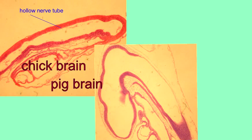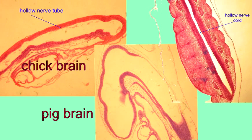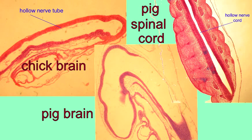The neural tube, which forms the nervous system, is hollow, as can be seen in this image of the brain of an embryonic chick, the brain of an embryonic pig, and the spinal cord of an embryonic pig. This is a hollow nerve cord.